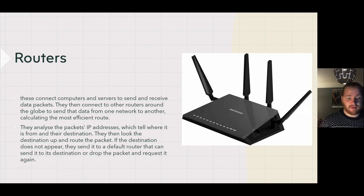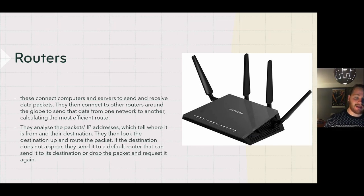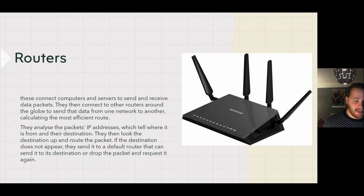Routers connect computers and servers to send and receive data through packets. They connect to other routers around the globe and send data from one network to another, calculating the most efficient route. They analyze the packet's IP address, which tells them where it is from and its destination. They then look the destination up and route the packet. If the destination does not appear, they send it to a default router that can forward it or drop the packet and request it again.